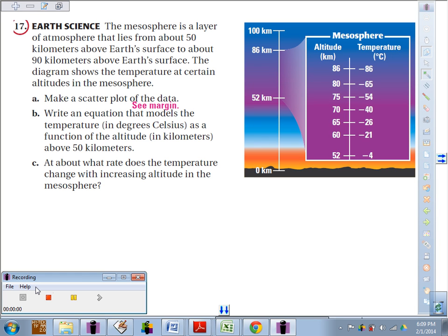Learning target 563: we're going to make a scatter plot of some real-world data and then try to come up with an equation modeling the data. Looking at number 17, Earth Science: the mesosphere is a layer of atmosphere that lies from about 50 kilometers above Earth's surface to about 90 kilometers above Earth's surface. The diagram shows the temperatures at certain altitudes in the mesosphere.